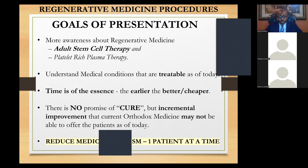There's a lot of hype around stem cell therapy. We are not promising a cure, but there's always going to be incremental improvement that current orthodox medicine may not be able to offer today. That's the advantage of regenerative medicine — in other words, when orthodox medicine says it is over, regenerative medicine says it may just be getting started.